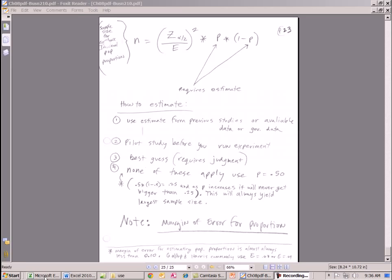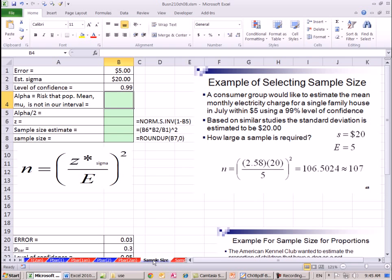Now we're over here on the sample size sheet. Here's our first example. A consumer group would like to estimate the mean monthly electricity charge for a single family house in July within $5. That'll be our error using a 99% level of confidence. We have our estimate of sigma, and we have to calculate our sample size. And there's our error, our estimate of sigma, and our confidence level 0.99.